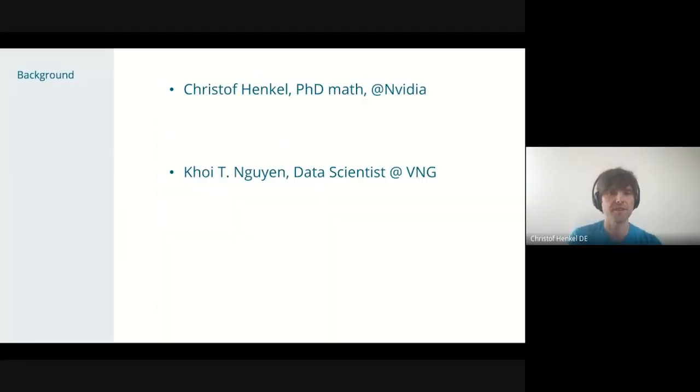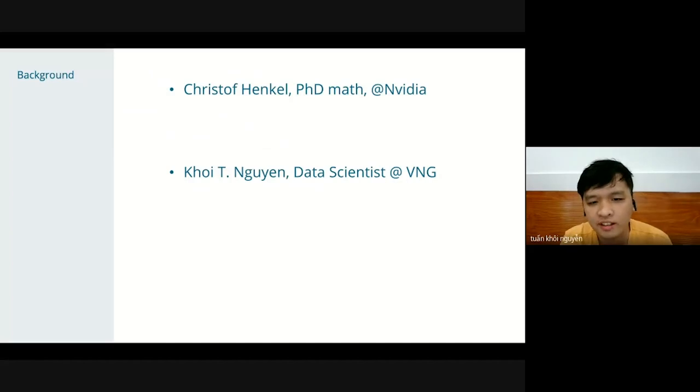So my name is Christoph. I have a PhD in mathematics, to be more precise in probability theory and stochastic processes. I work at NVIDIA as a data scientist. I'm Koi Nguyen, I'm a data scientist at VNG Corporation in Ho Chi Minh City of Vietnam.